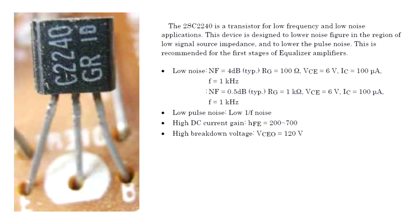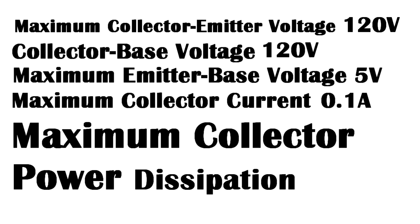Its ratings are as follows: Maximum collector emitter voltage 120V, collector base voltage 120V, maximum emitter base voltage 5V, maximum collector current 0.1A or 100mA, maximum collector power dissipation 0.3W or 300mW.